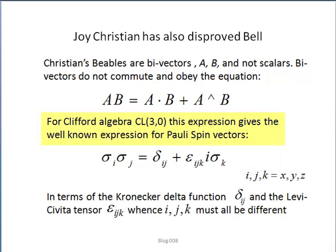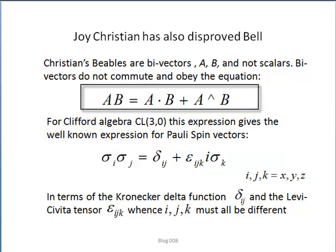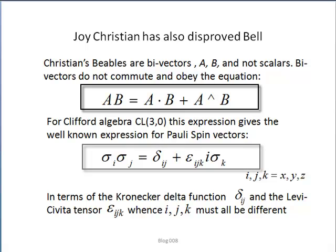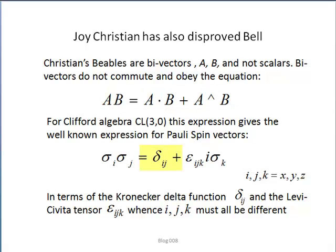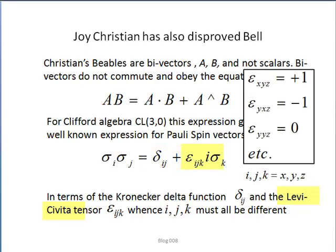Now I mentioned that the Pauli spin operators represent the Clifford algebra Cl(3,0). This general expression reduces to the well-known relationship between Pauli spin operators in terms of the Kronecker delta function (i must equal j).